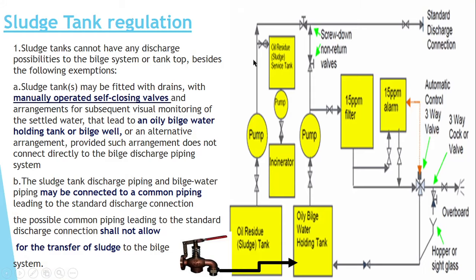Now, you have a sludge tank and an oily bilge water holding tank. What is the oily bilge water holding tank? Whatever water leakage occurs in an engine room is collected in an oily bilge water holding tank, which is passed through OWS equipment to the overboard, ensuring it is less than 15 ppm. Now, if anybody asks you: can you drain the sludge tank to the oily bilge water holding tank? The answer should be yes, it can be done.